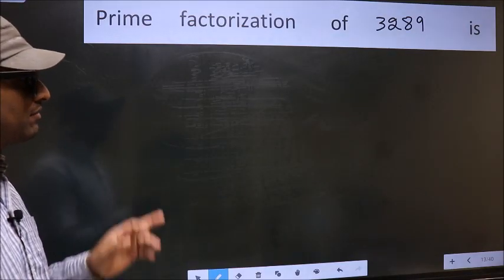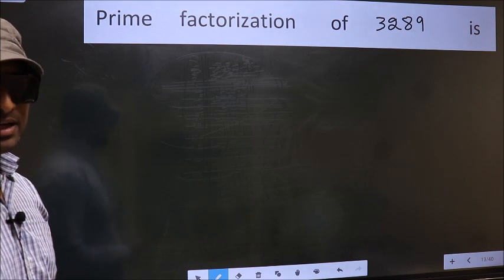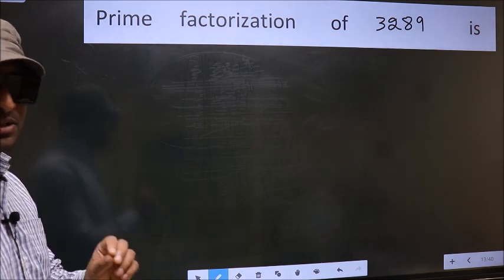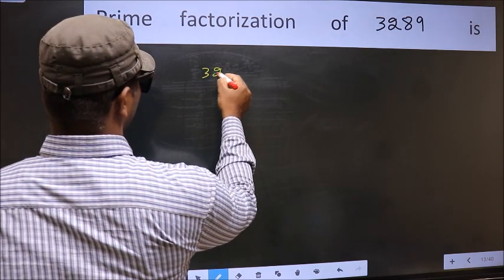Prime factorization of 3289. To do prime factorization, first we should frame it in this way. 3289.